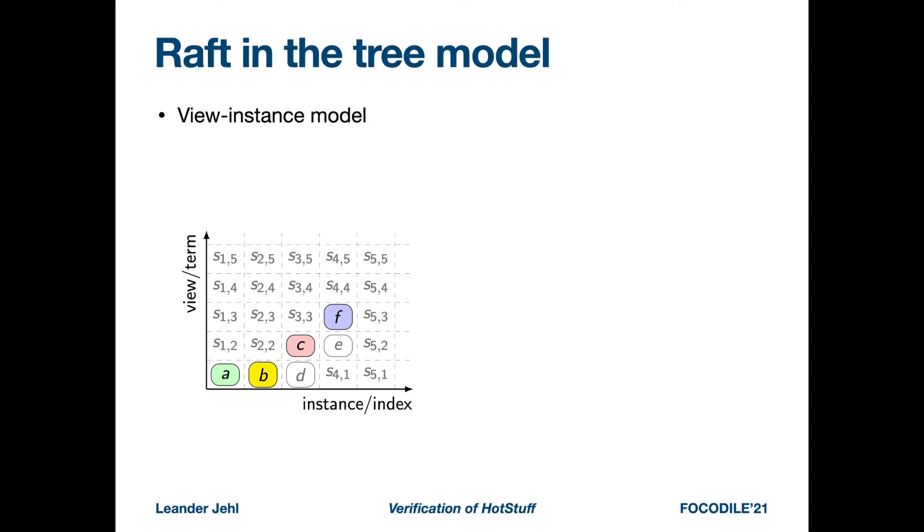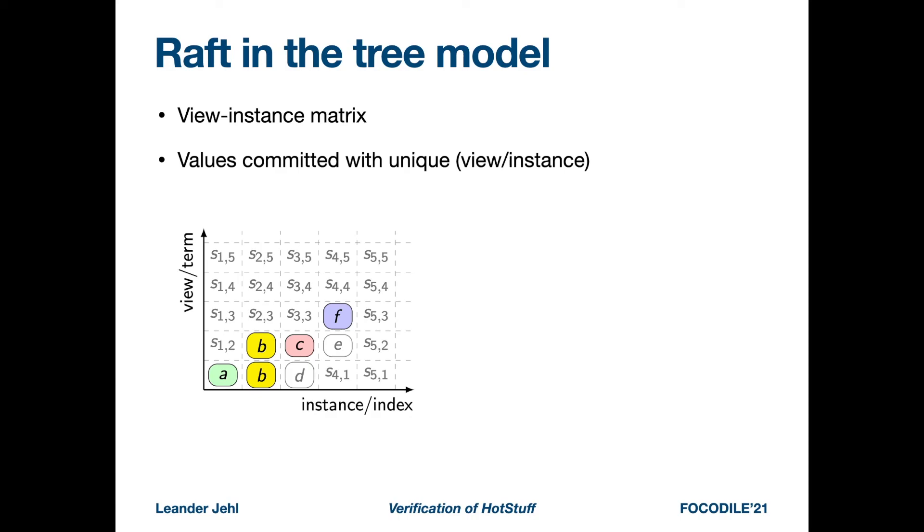Raft operates in what we call the instance view model. Thus, values are proposed and committed with a tuple of instance and view number. These are also called index and term in Raft. In the figure, you see a matrix of slots, each having an instance and a view. Some slots have proposed and committed values. Let's assume that the gray values are only proposed and the colored ones are both proposed and committed.